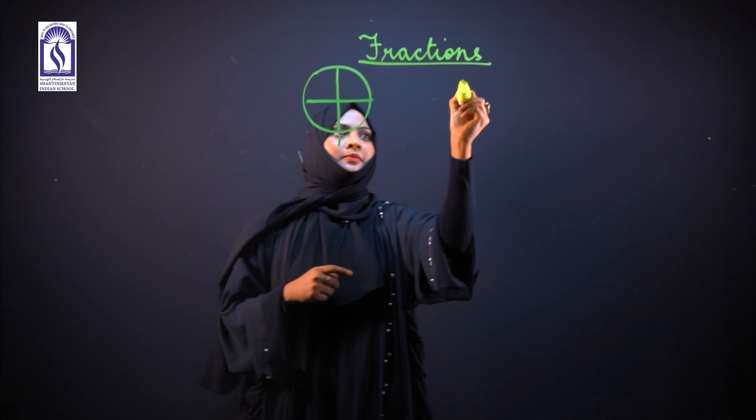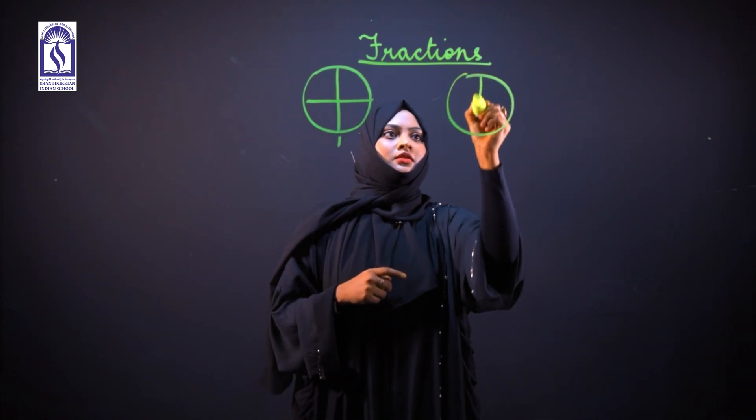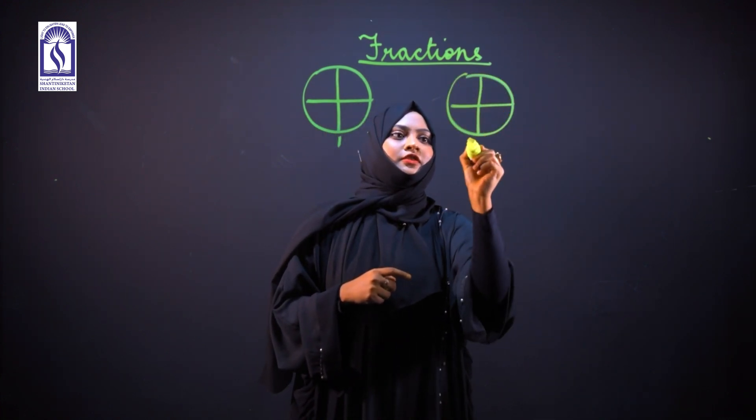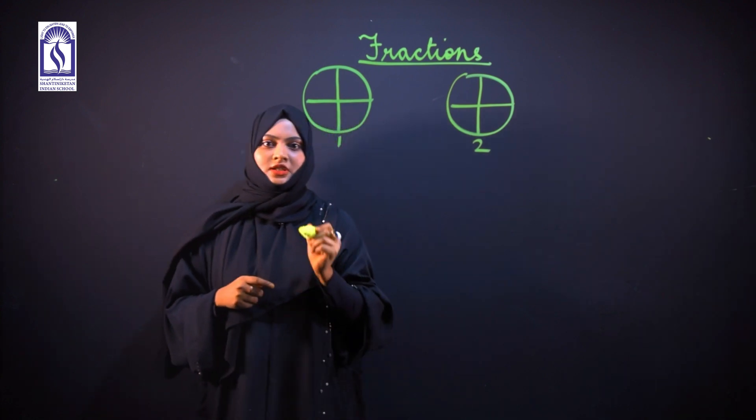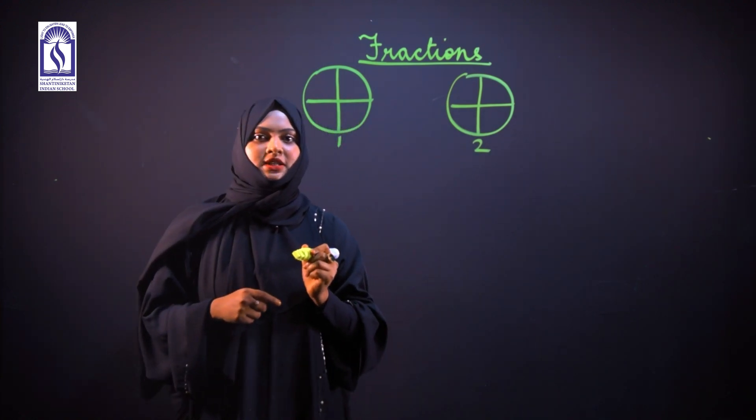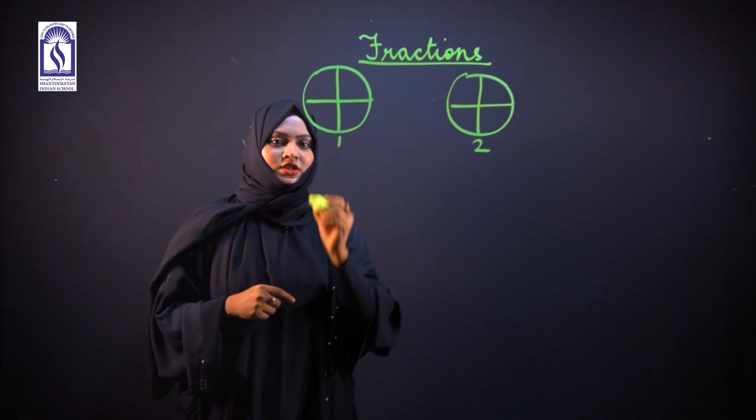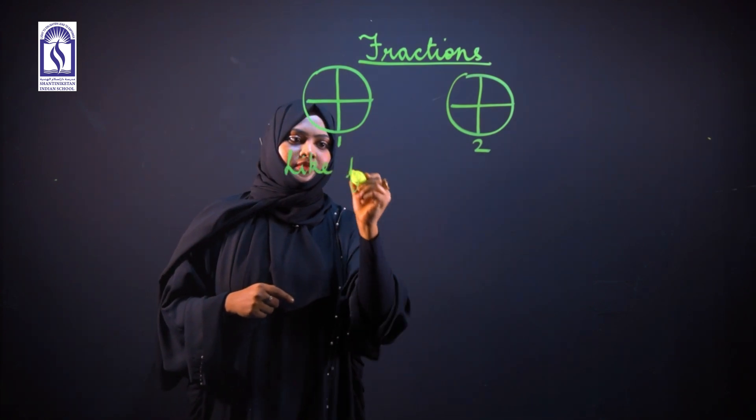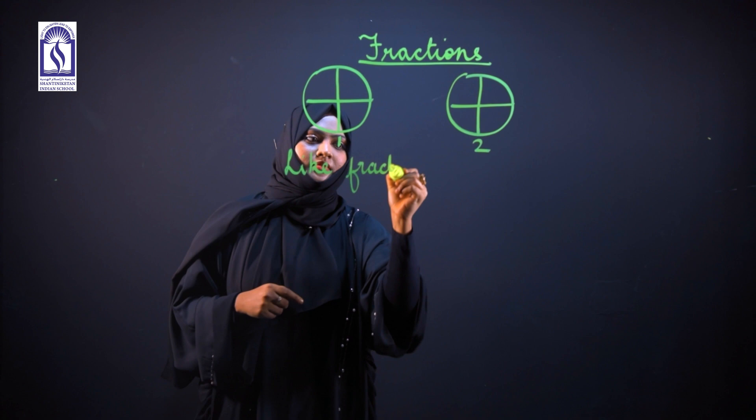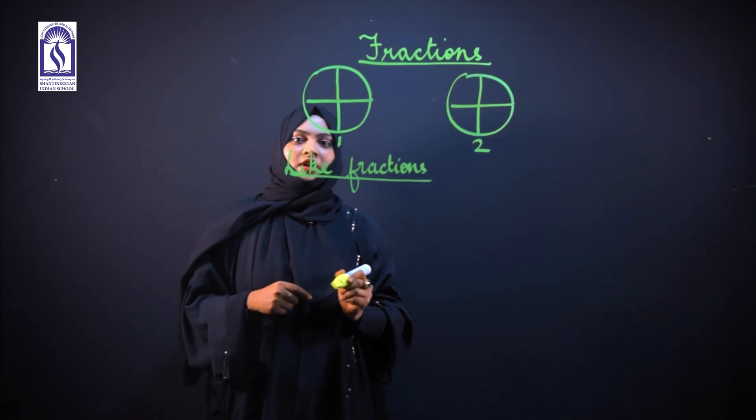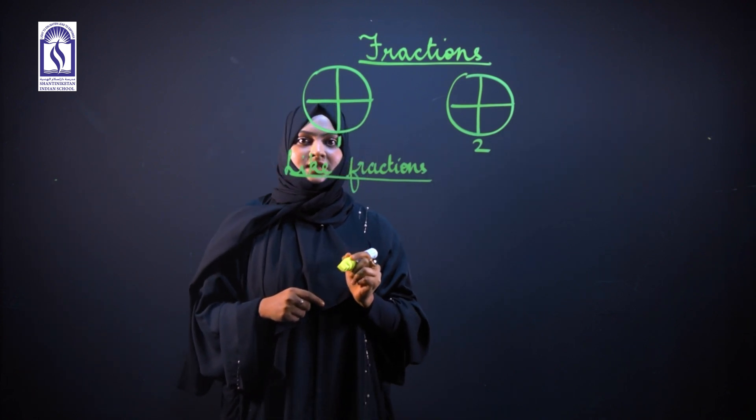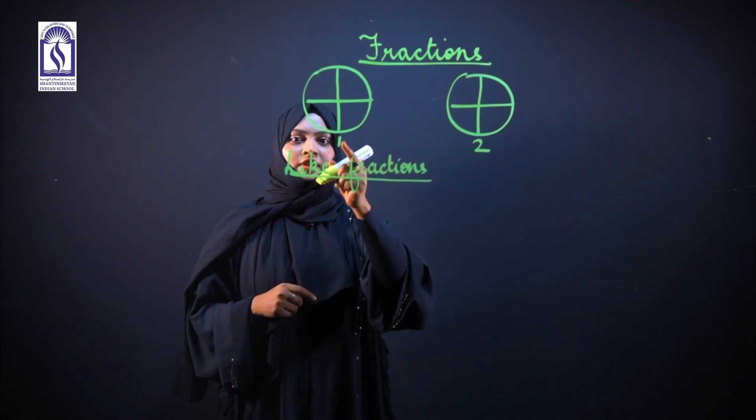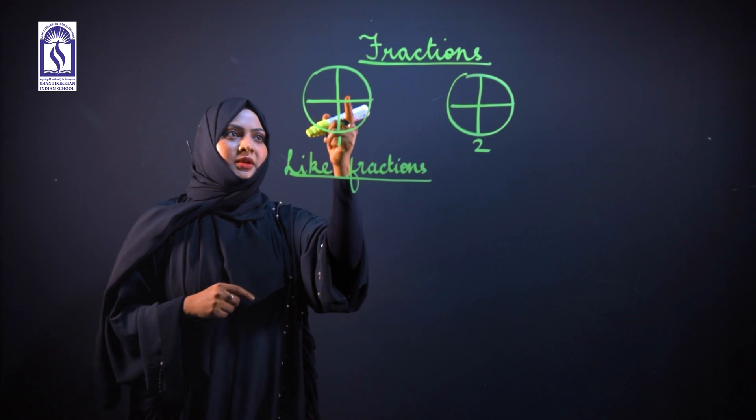This is figure one, this is figure two. The first type of fraction that we introduce is like and unlike fractions. Like fractions are fractions that have got the same denominator. If we look at figure one, total parts we have four.